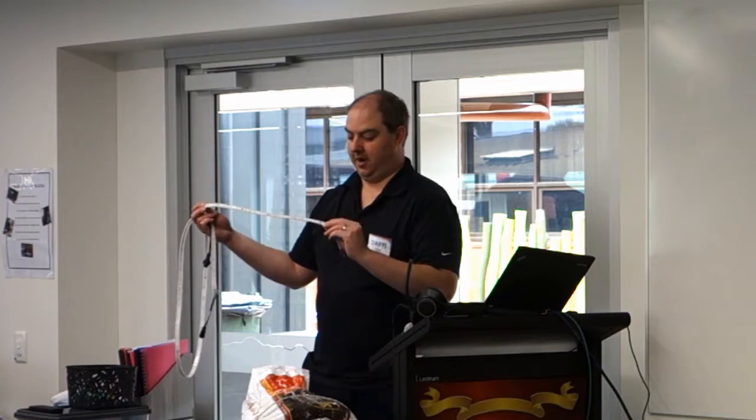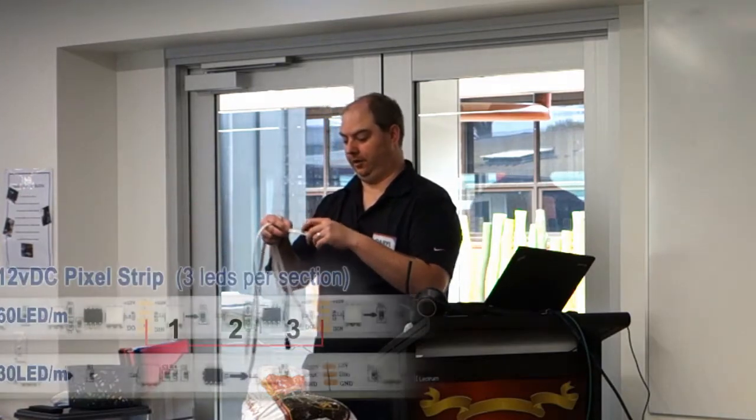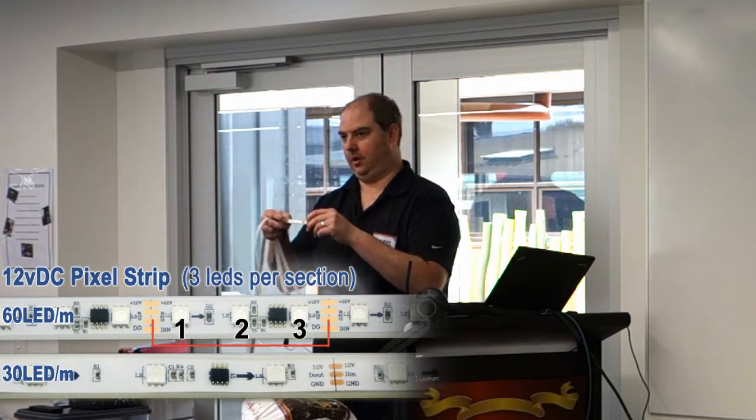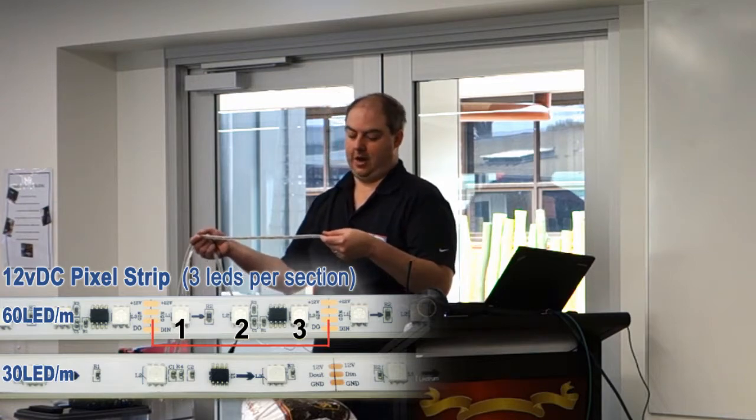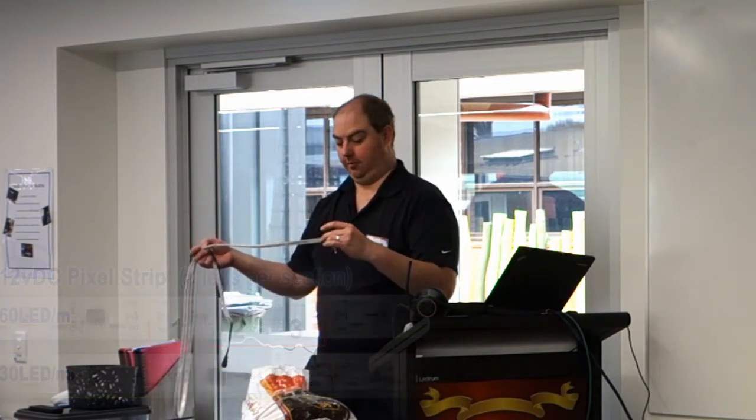These come in lots of different styles. For instance, this one is also 30 LEDs per meter, but instead of each LED being individually controllable, the three LEDs in a group go with the same color at the same time. You might choose that for a price advantage, or because these ones I'm holding here are 12 volts whereas the first lot are 5 volts, which can save you some problems in terms of power injection.